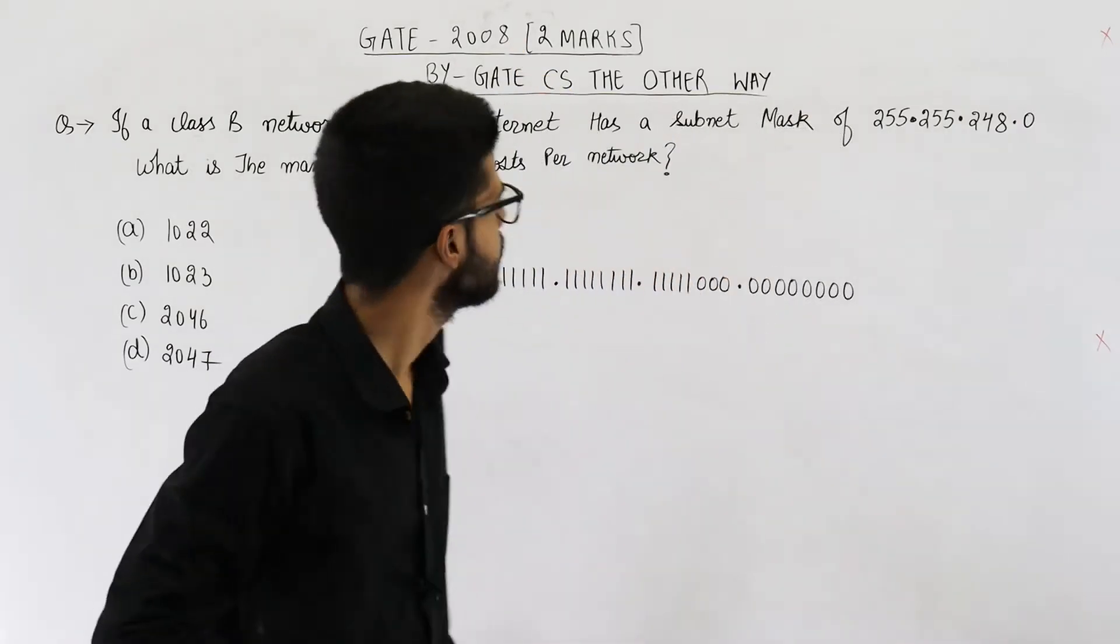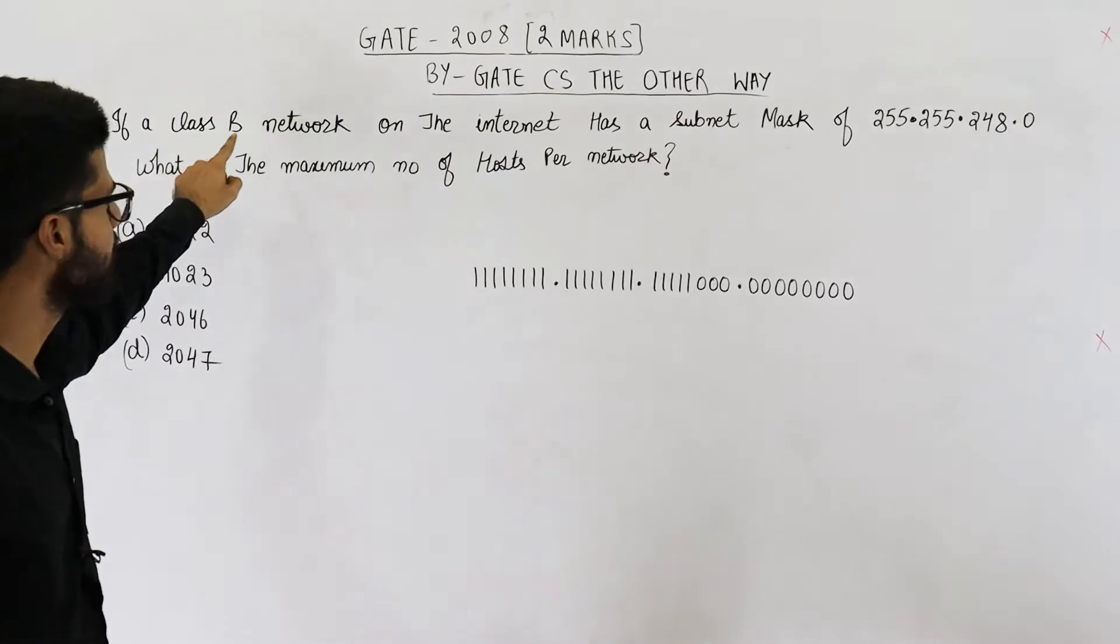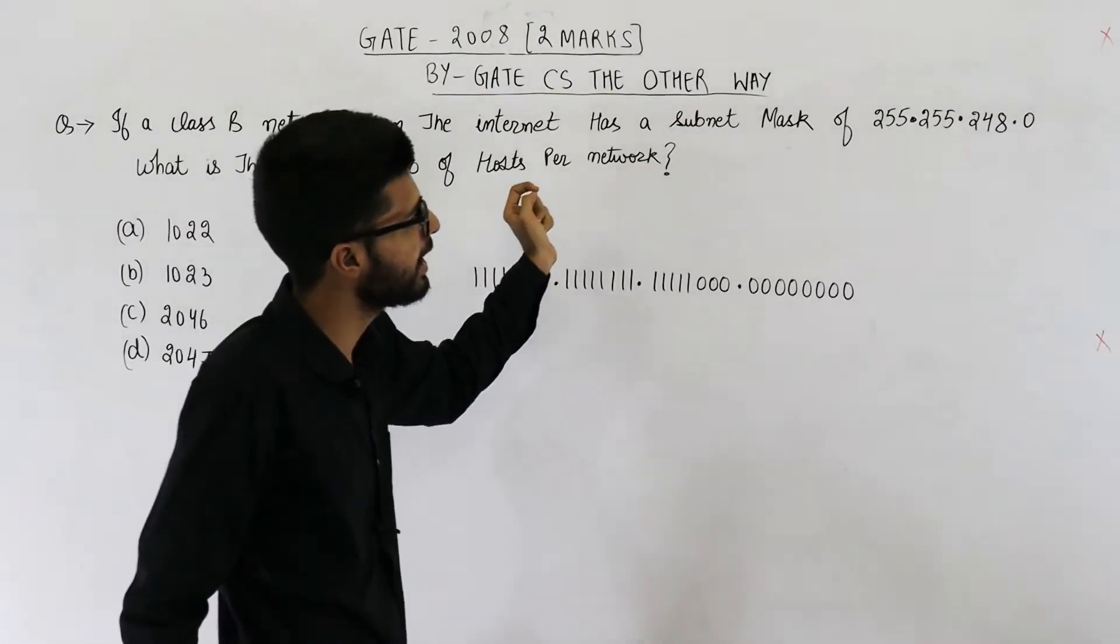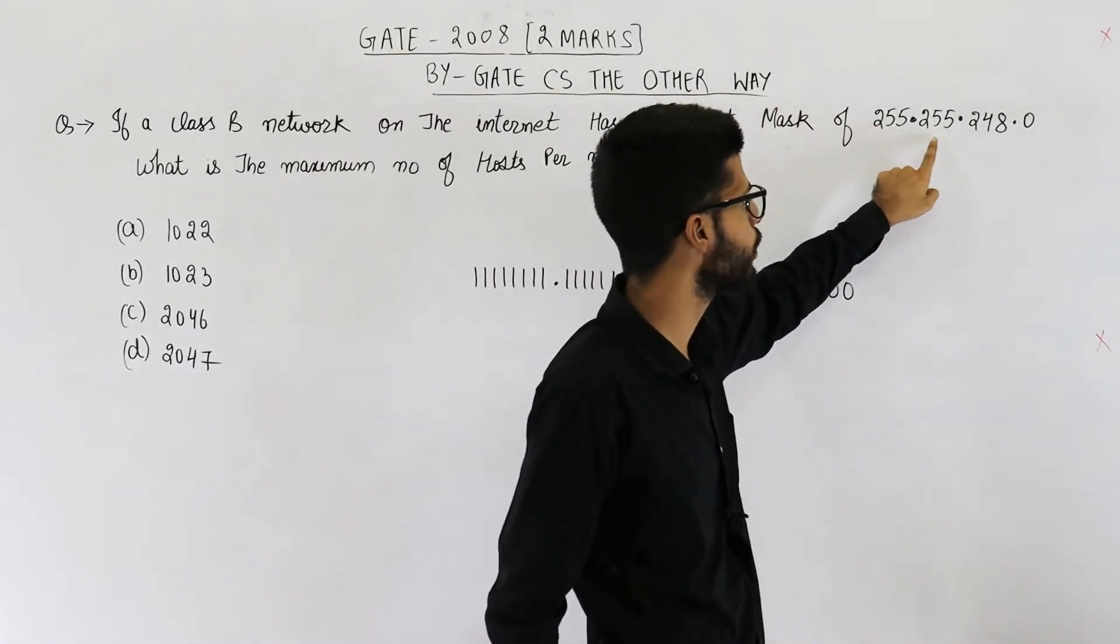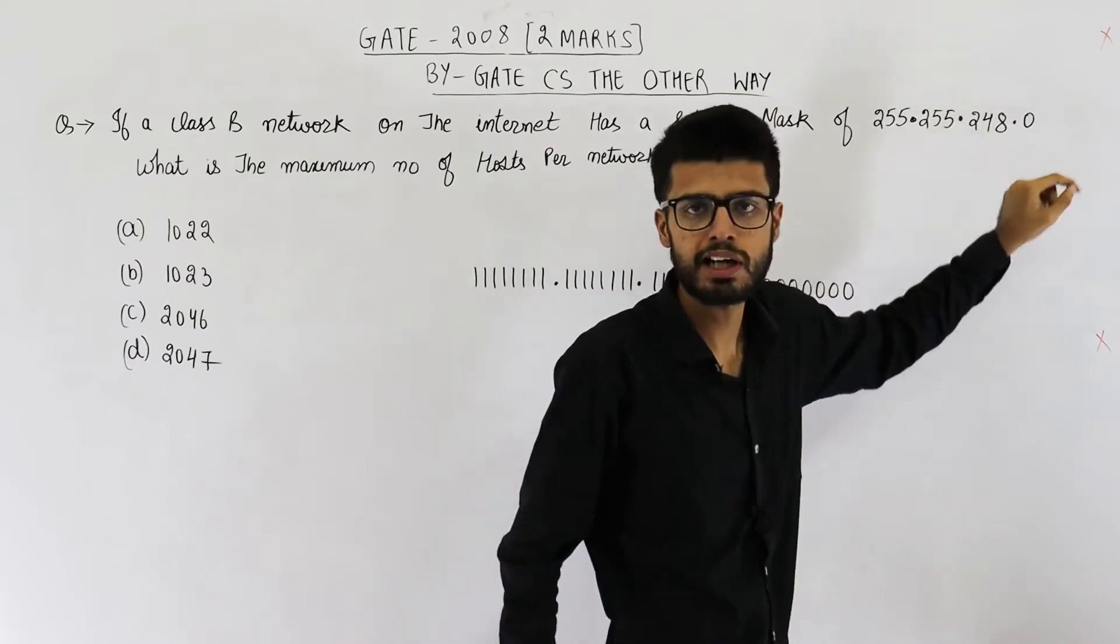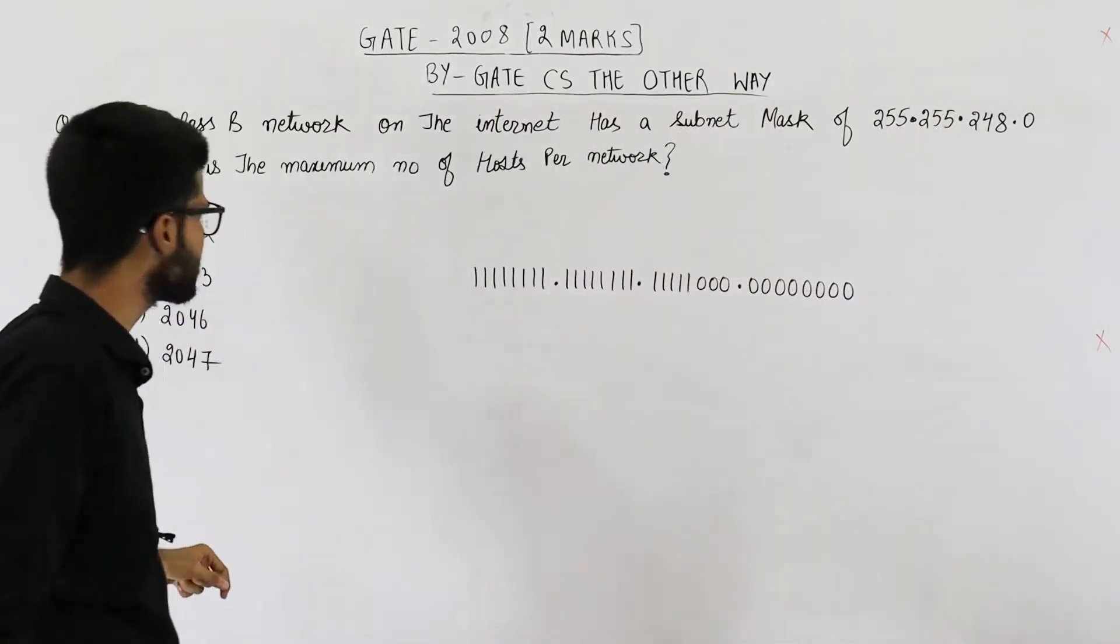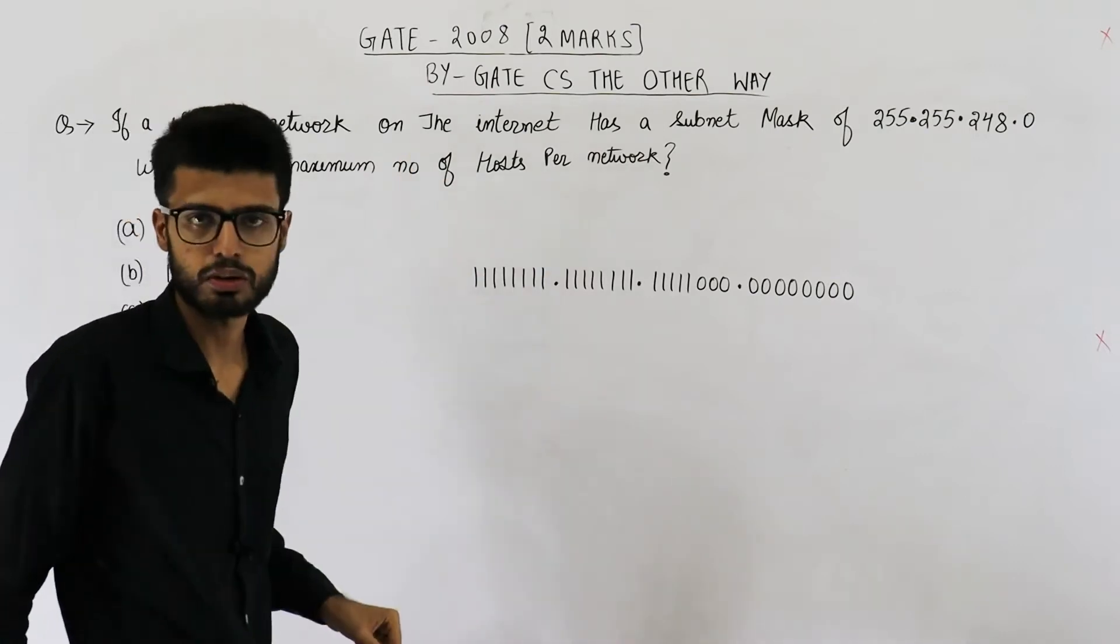So let us read the statement. They are saying, if a class B network on internet has subnet mask of 255.255.248.0, what is the maximum number of hosts per network?